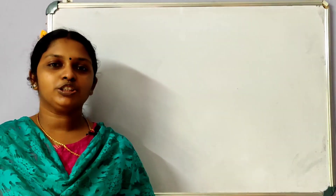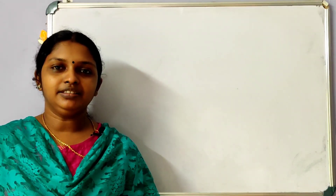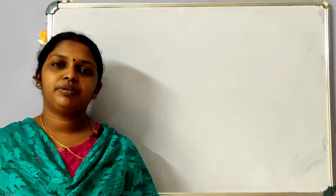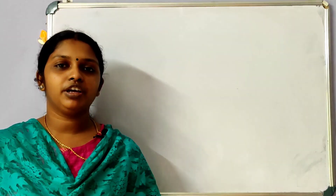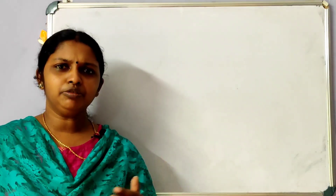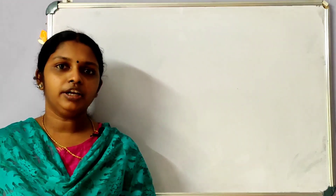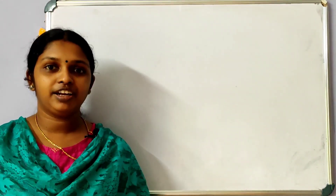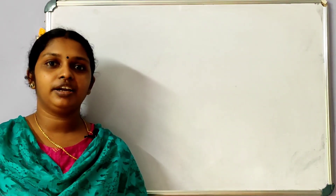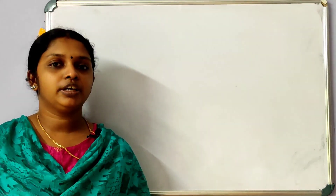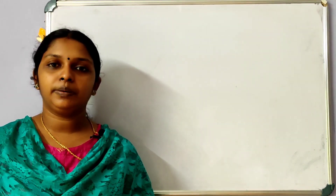Hello, we are going to talk about the second chapter of Microeconomics — the theory of consumer behavior. We are going to learn a few things like Cardinal Utility and Ordinal Utility.